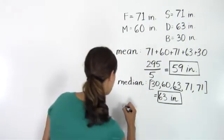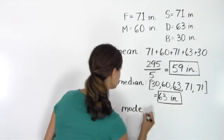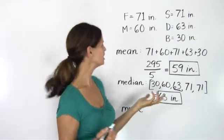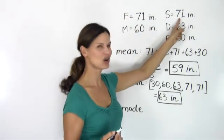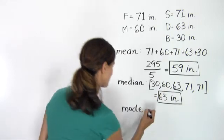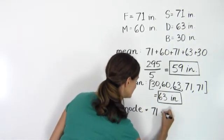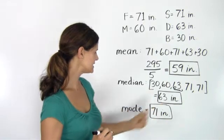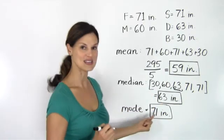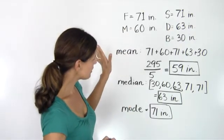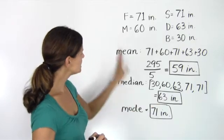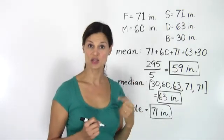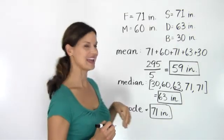To find the mode, we're looking for which height is the most common. The only one that occurs twice is 71 inches, so the mode is 71 inches. So we've got a mean of 59 inches, median of 63 inches, and mode of 71 inches. Notice how each method finds a completely different number to describe our set of values. Depending on the conditions and what information you're seeking, the different methods are more appropriate than others.